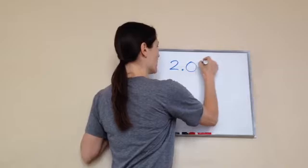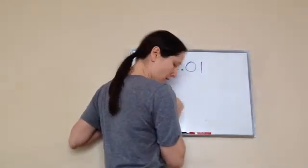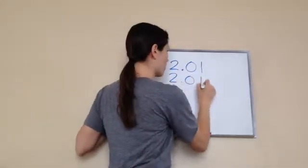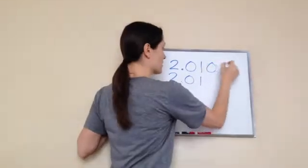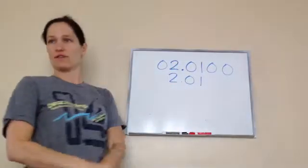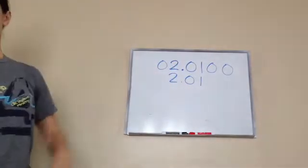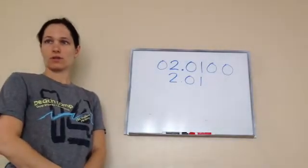So if I have 2.01 and I have 2.01, but I add some zeros in the beginning and the front. Are those two the same numbers? Yes, yes.